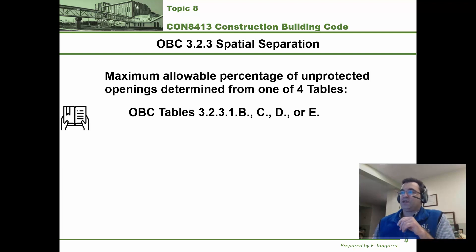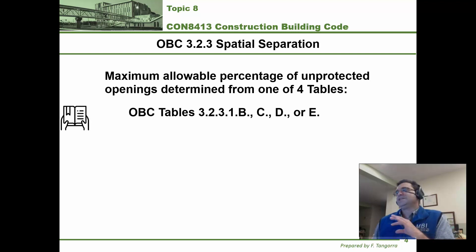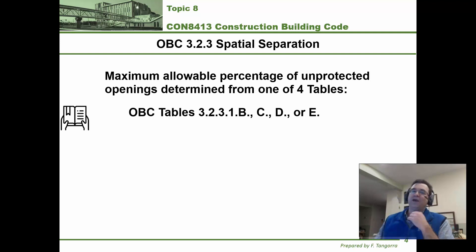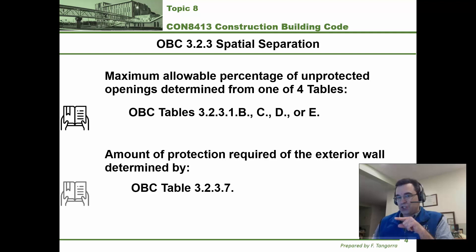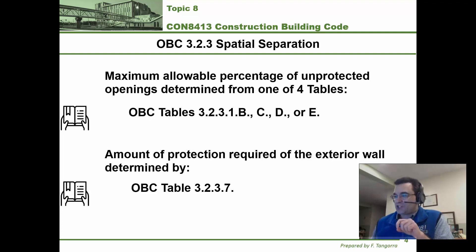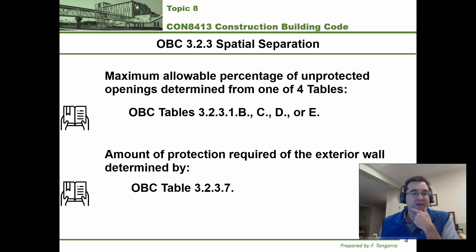These four tables are 3.2.3.1b, 3.2.3.1c, 3.2.3.1d, and 3.2.3.1e. You want to be flipping to those right now — you have the building code open in front of you. In addition, table 3.2.3.7 also provides details about the protection required for the exterior wall depending on the percentage of area.